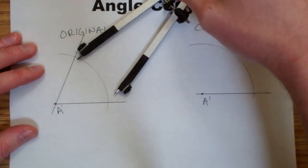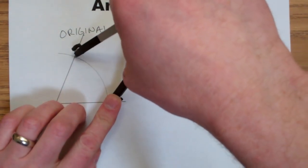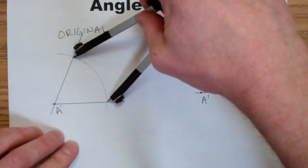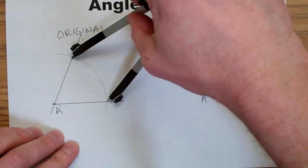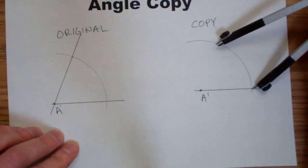Now, I'm going to set my compass to the distance between the two intersections on the original. And I'm going to take and transfer that distance over to the copy.